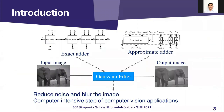Many multimedia applications use filters as a pre-processing step. One example is the Gaussian filter, which is a compute-intense test used in multimedia applications to blur and reduce image noise. Applying approximate computing to this filter optimizes the resources.